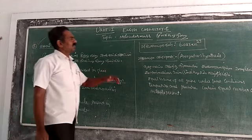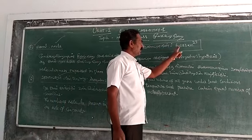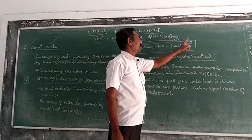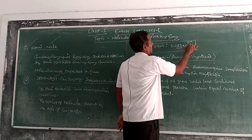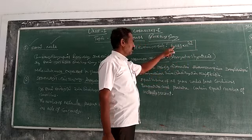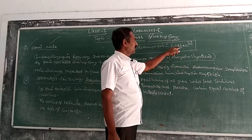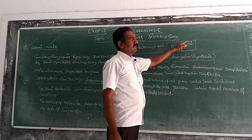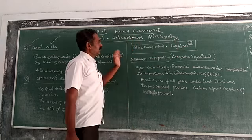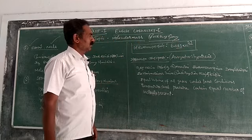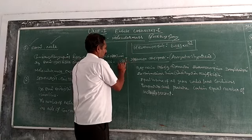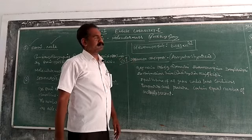The value is approximately 6.023 times 10 to the power 23. This is how we use Avogadro's number.